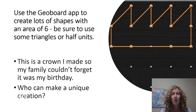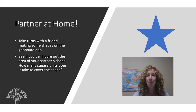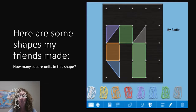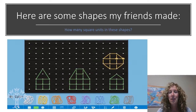Get your at-home learning partner and see if they will make some shapes with you. You can make a creation that has any number of square units and trade it with your partner. See if they can figure out the surface area of the shape that you made. Here's a shape that Sadie made using the GeoBoard app — can you figure out what the area is? Here's a picture that Colin made. It looks like buildings and a sun to me. I can see some squares and some half squares or triangles that make up that sun.